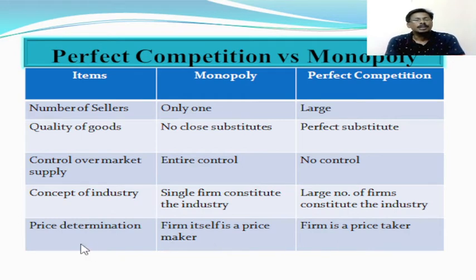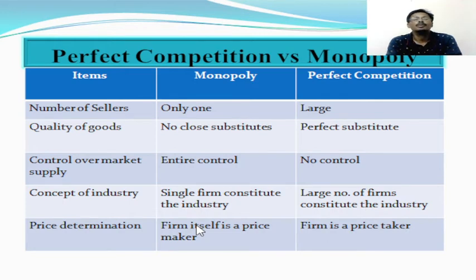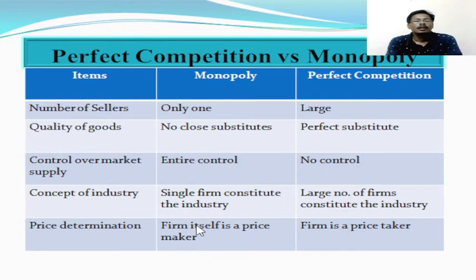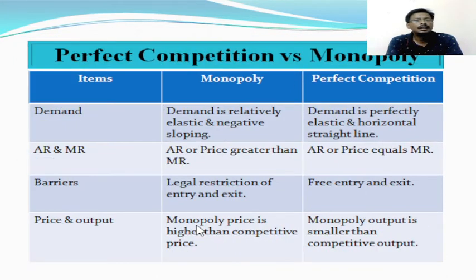Another difference relates to determination of prices. Under monopoly market, the single seller who has the patent right and controls the entire market supply has the authority to determine the price, and he is called to be the price maker. But in case of perfect competition, no single firm has authority or influence over price. The competitive firm is called to be a price taker, because the price is determined by the industry through the equality of demand and supply forces. In perfect market, the industry is the price maker and the firm is the price taker.